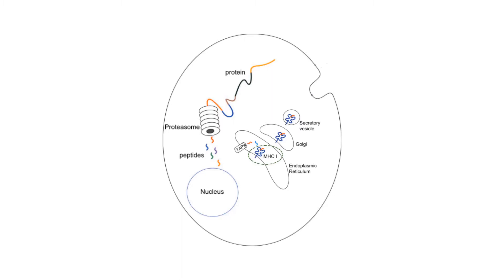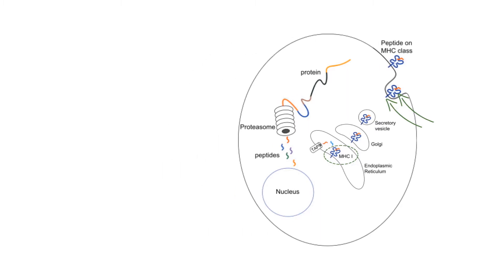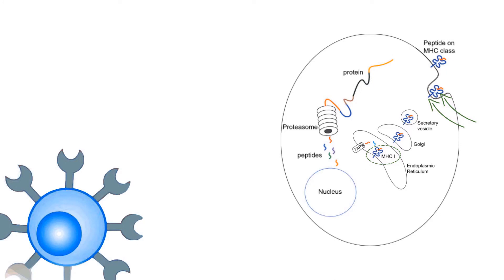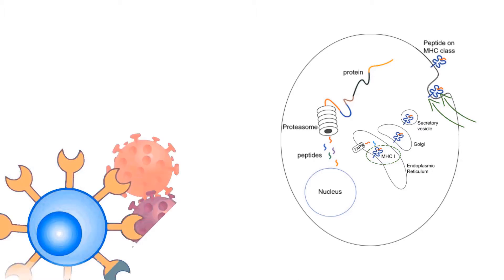That protein is known as MHC1. The MHC1 is then able to make its way to the cell membrane, and while a portion of the MHC1 stays inside the cell, the portion that holds the antigen extends to the outside of the cell. The MHC1 allows the antigen to be presented on the outside of the cell. When there is no disease present, this is a healthy normal antigen.